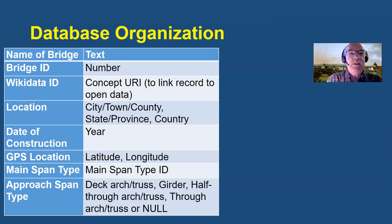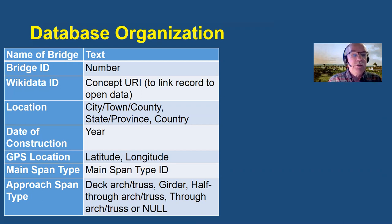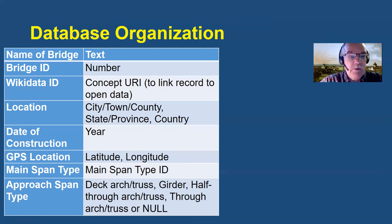Each bridge is classified using a bridge identification number, using a Wikidata identification number that links the record to open data sources. The bridge location — city, town and county, state or province in Canada, and country — are noted. The year of construction is categorized. The GPS latitude and longitude is known. The main span type is given an identification number, and the approach span is classified as one of seven alternate approach spans, or null for a bridge that doesn't have an approach span.